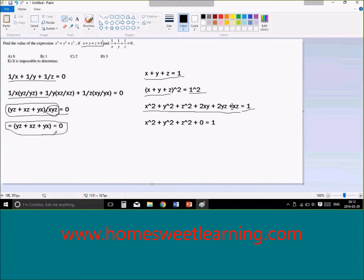So from this expression on the left right here, we see that this part of this expression will equal to 0, so that we will be left with x squared plus y squared plus z squared plus 0 equals 1.